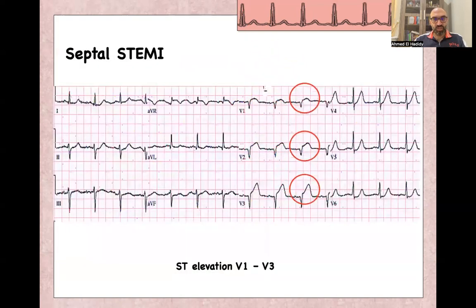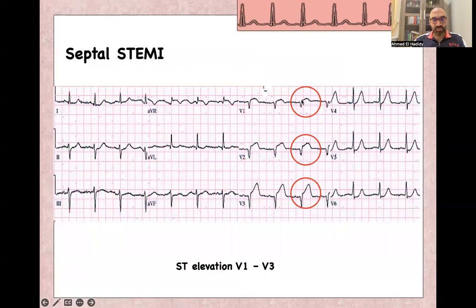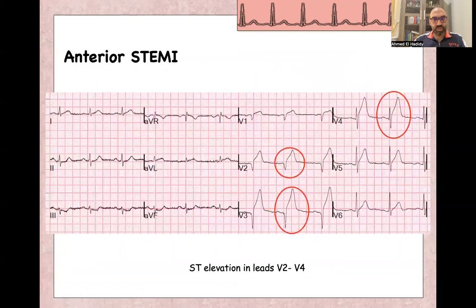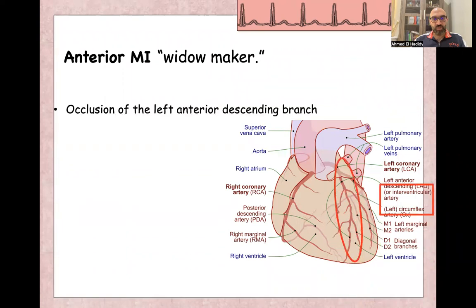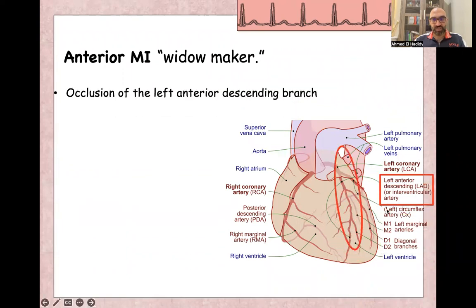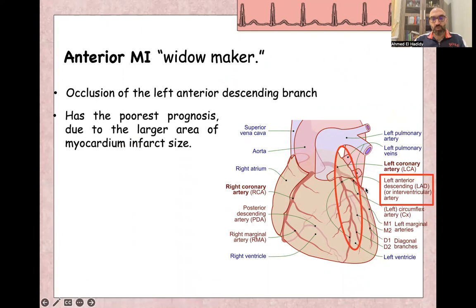Here there is ST elevation of more than one small square and more than 0.15 millivolts in leads V2 and V3, and slight elevation in V1 — this is septal myocardial infarction. For anterior STEMI, there is ST elevation and Q-waves in leads V2, V3, and ST elevation in V4. Anterior myocardial infarction, called the widow maker, appears due to occlusion of the left anterior descending artery and has the worst prognosis among all myocardial infarctions due to the large area of infarction.